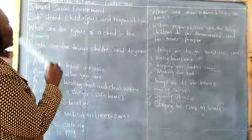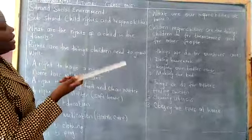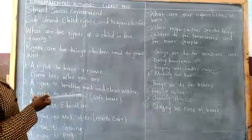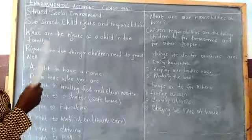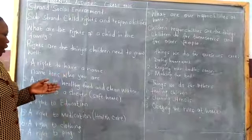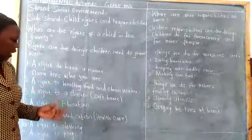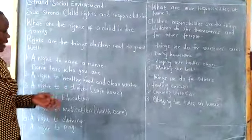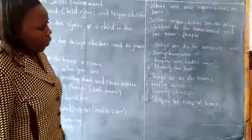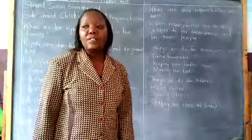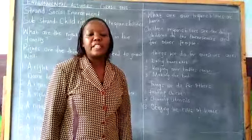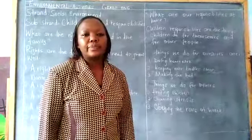That is about child rights and responsibilities. Children's rights, like we have said, are the things that we require to grow well: right to a name, right to education, right to shelter, right to medication, right to clothing, and also right to play. We have come to the end of our lesson today, and we will get more as we log into our Soho Plus app. Thank you.